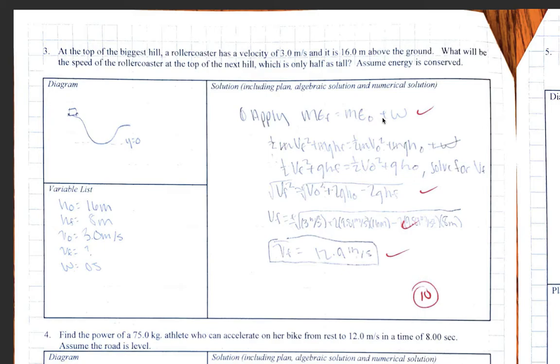They applied the mechanical energy, the work energy theorem. They developed an equation. They told me they were going to solve this equation for V final. They solved it for V final algebraically, and then they plugged in their numbers and got the final velocity at the top of the second hill. A lot of people actually found the velocity at the bottom of the first hill, and then used that to find the velocity at the top of the next hill. And that's valid.